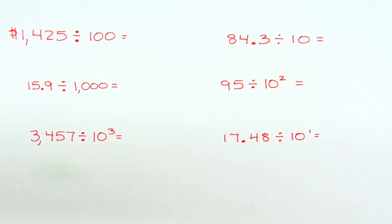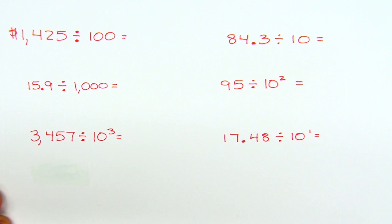Hello, Mr. Dre back with another video. In this one, what we're going to do is divide decimals by the power of 10. What we mean by a power of 10 is 10, 100, 1,000, and so on. Sometimes they're just written as that, sometimes they're written with a base and an exponent, but either way this strategy is showing you how to divide by a power of 10.